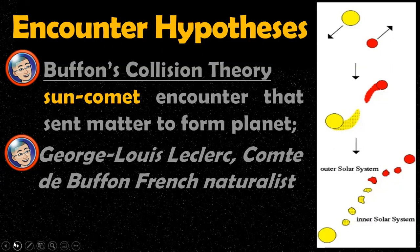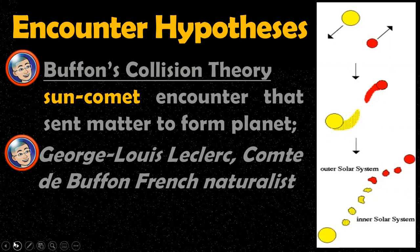First, we have the Buffon collision theory. Take a look at the picture — the yellow represents the sun and the red represents the rogue star. What happened here was our sun accidentally collided with the rogue star. As a result, debris coming from the sun and the rogue star were removed from them. These debris were hot gases scattered in the universe, and they eventually cooled down and formed into planets. The materials from the sun became the inner planets, and the materials from the rogue star became the outer planets.